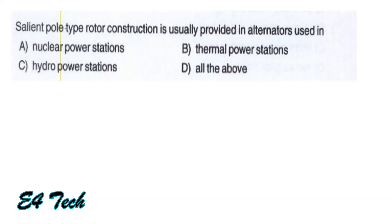The salient pole type rotor construction is usually provided in alternators used in hydroelectric power generation, that is, hydro power stations. That is option C.